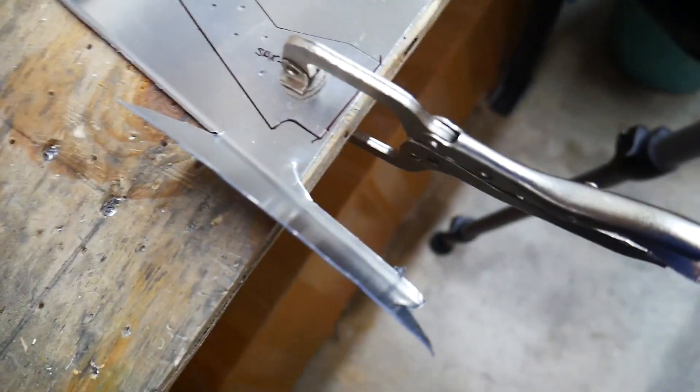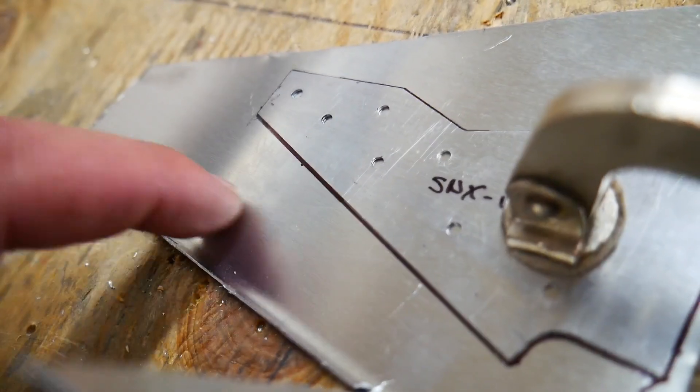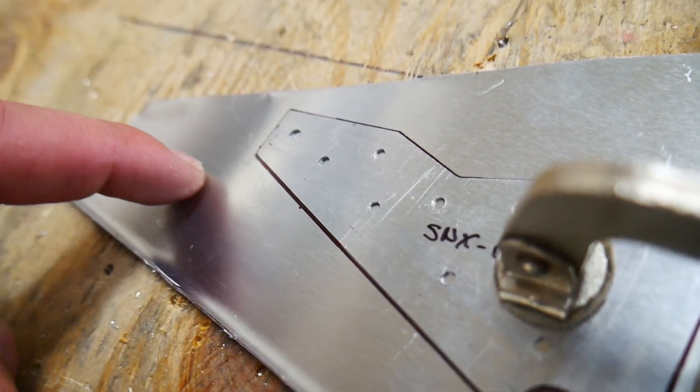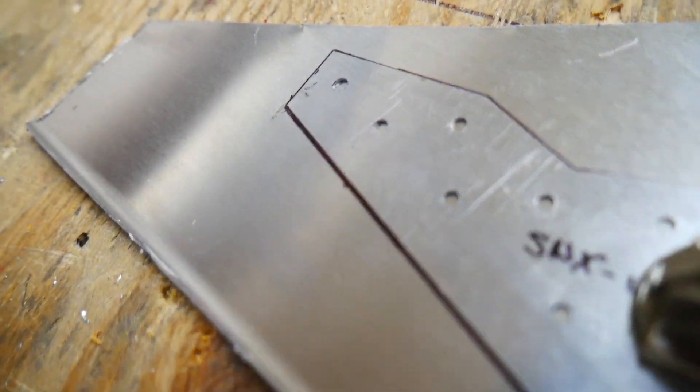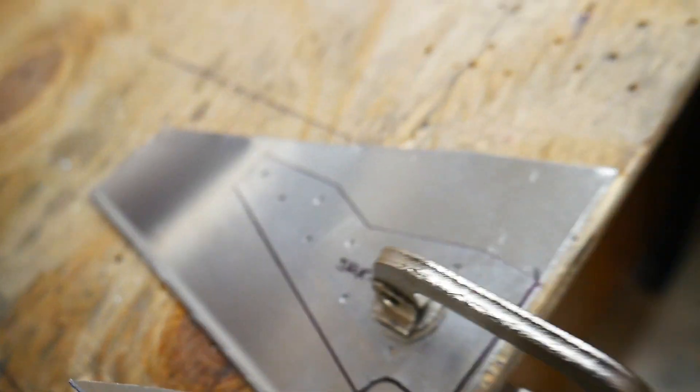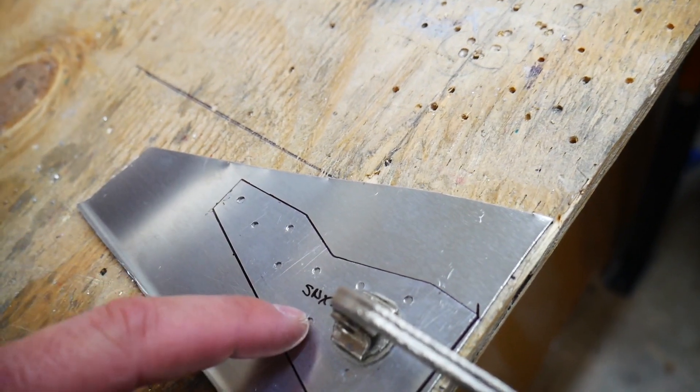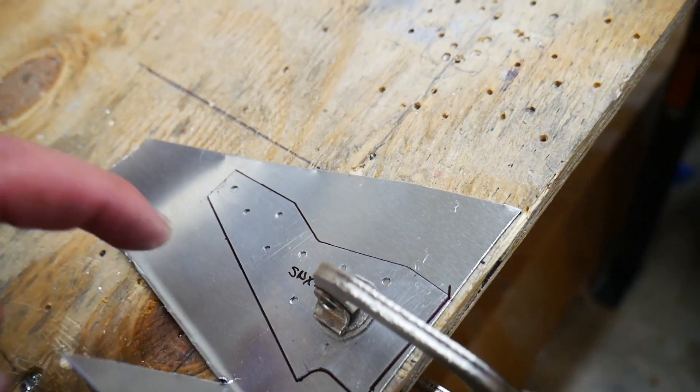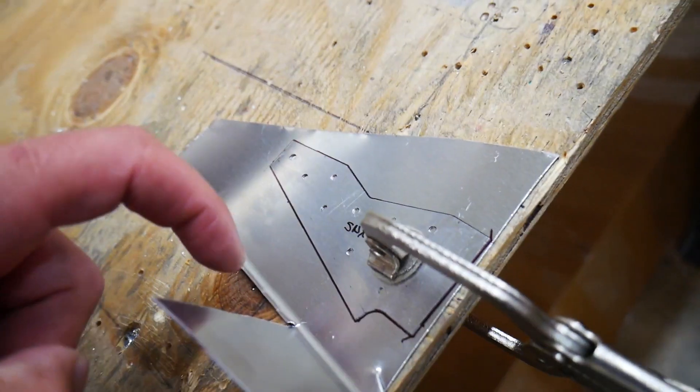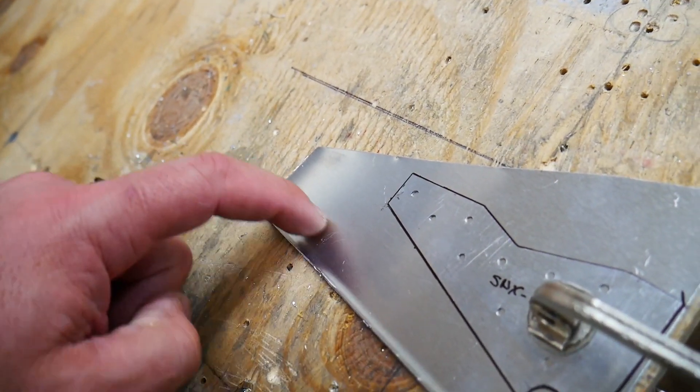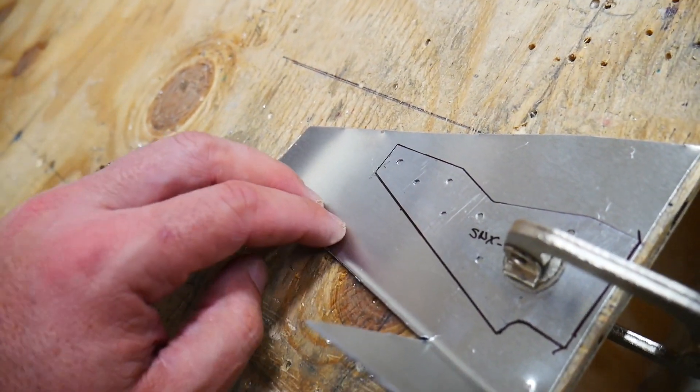One other thing you want to pay attention to is if you look at the metal here you'll see a grain kind of going this direction right here. One thing you need to make sure that you do is when you're lining up these parts to bend you got to make sure that the grain is in the right direction. You don't want to bend it right along where the grain is because it'll actually have a weaker spot there.